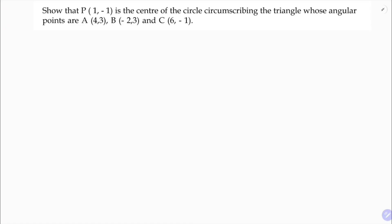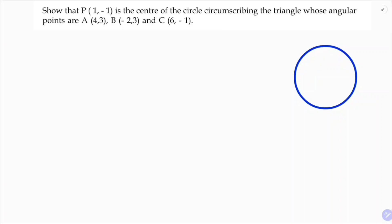Show that P(1, -1) is the center of a circle circumscribing the triangle whose angular points are A, B, and C. Three vertices are given, so P is the center of the circle. I'll take a triangle with three vertices A, B, C considered in this way.